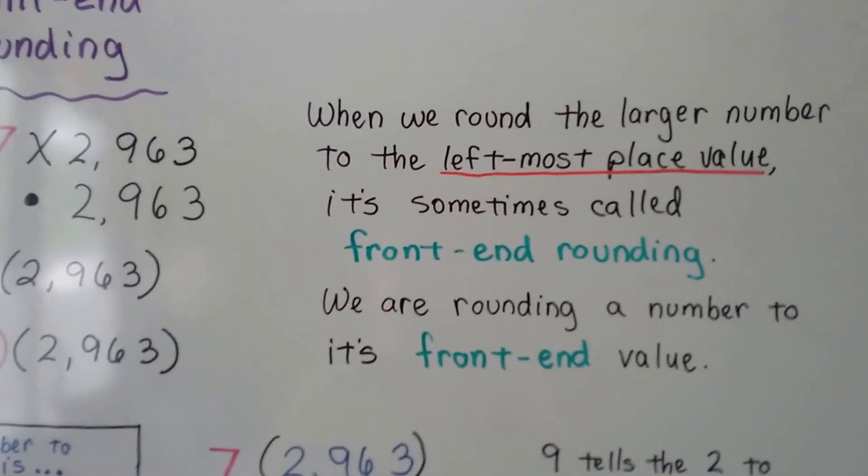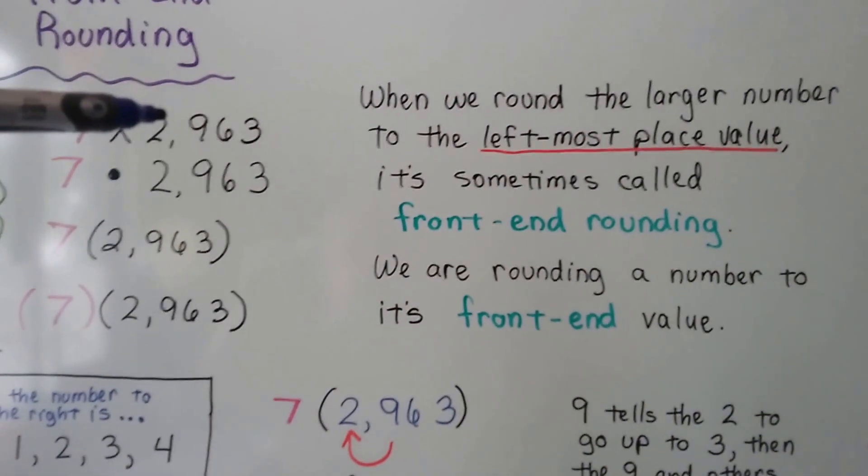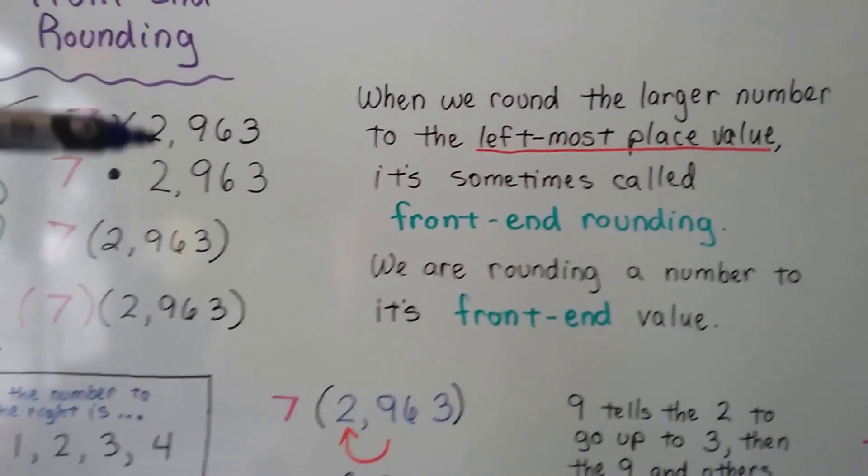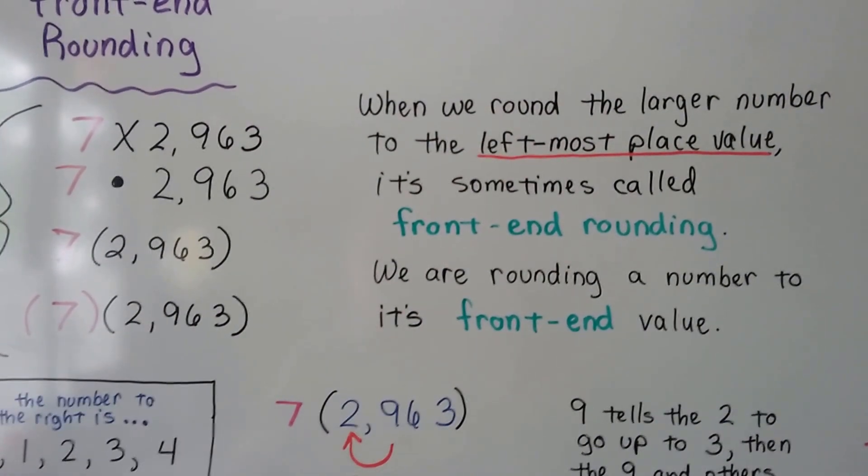When we round the larger number to the leftmost place value, when we're rounding this to its leftmost place value, it's sometimes called front-end rounding. We are rounding a number to its front-end value.